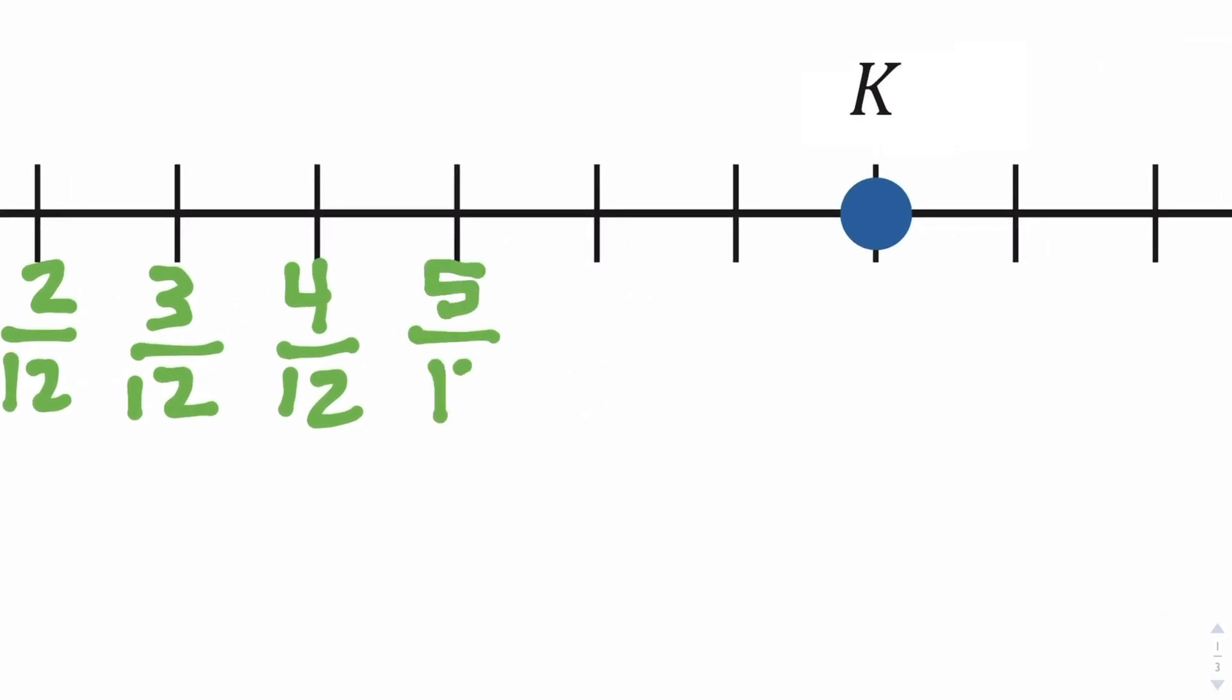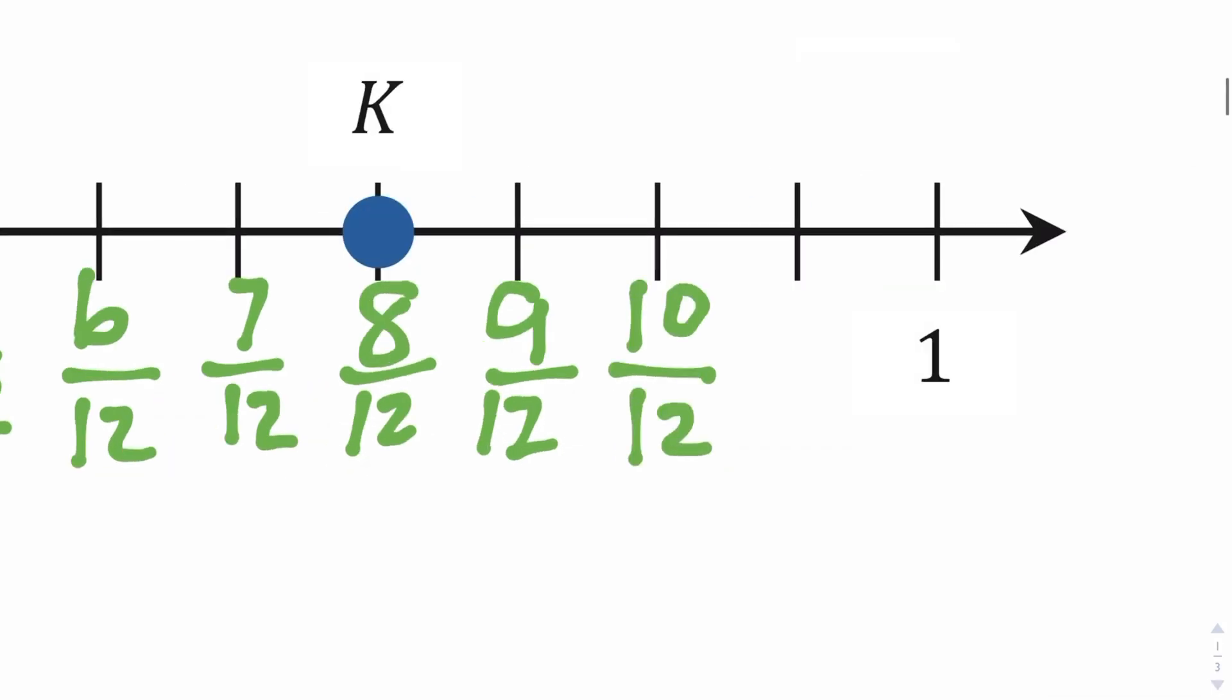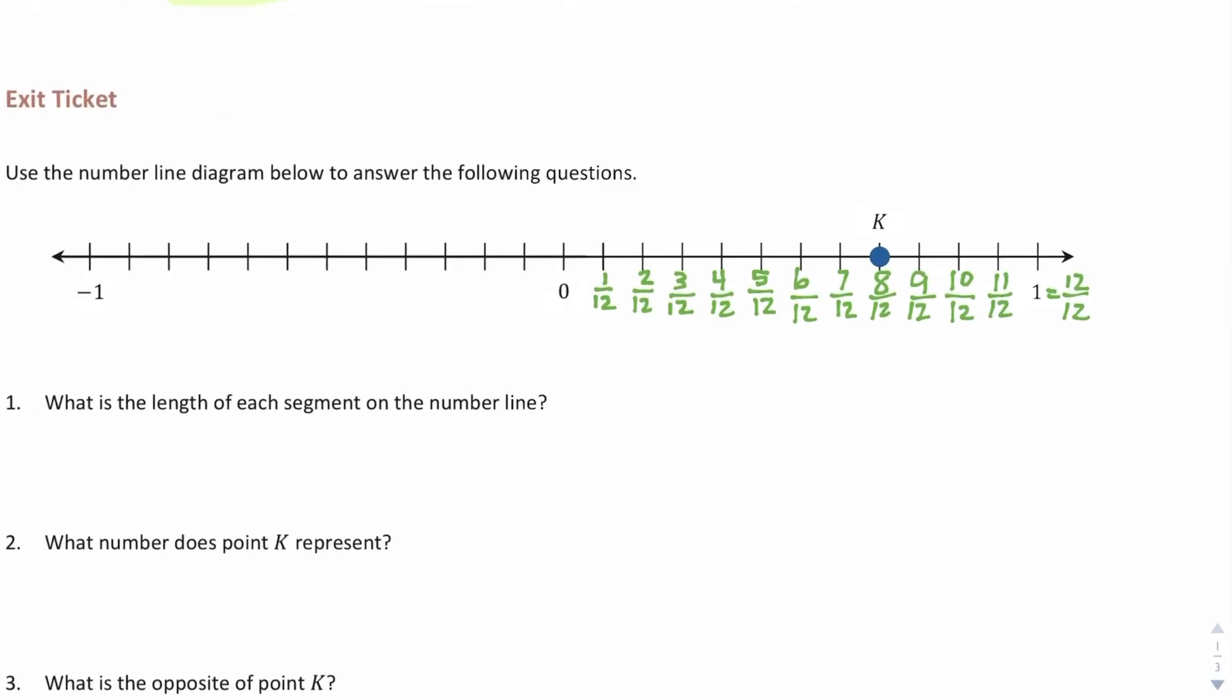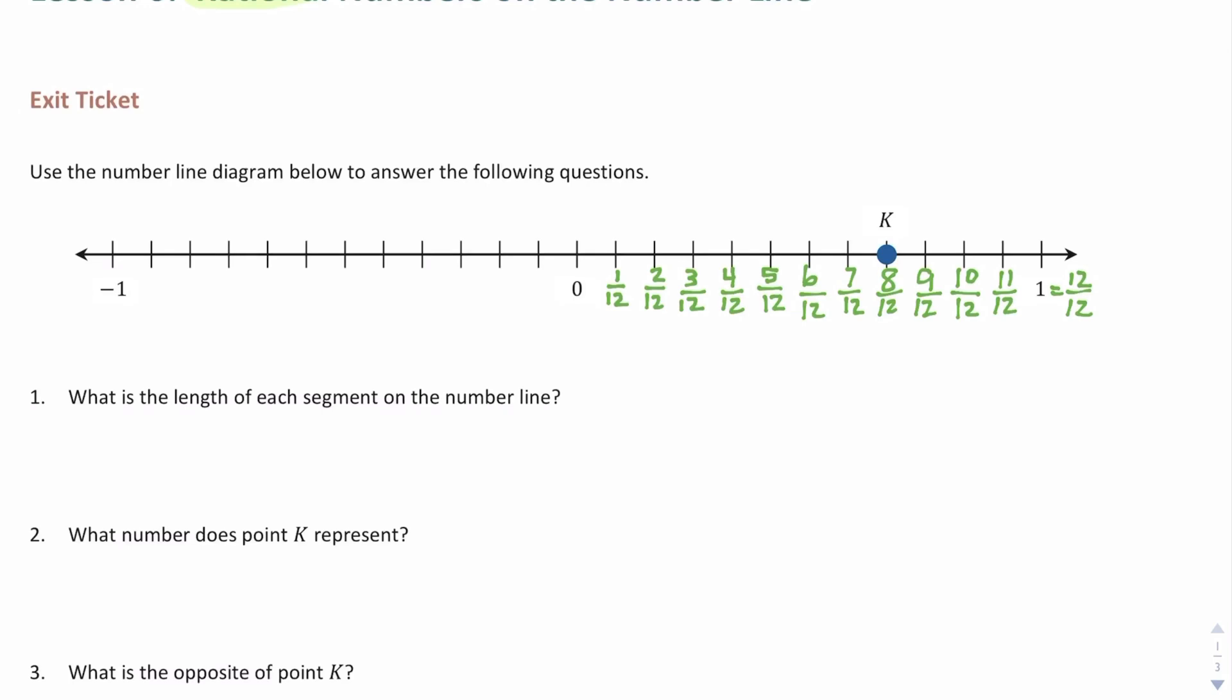I'm going to go ahead and number the entire number line, each time counting up by one on my numerator, giving my denominator as twelfths. And what you're going to see here is that when we get to the end of this number line, we will have one whole. We have eleven twelfths, and then we actually have one, which is equal to twelve twelfths. So you can see the number line goes by a fraction. The same thing would apply in the negative direction.